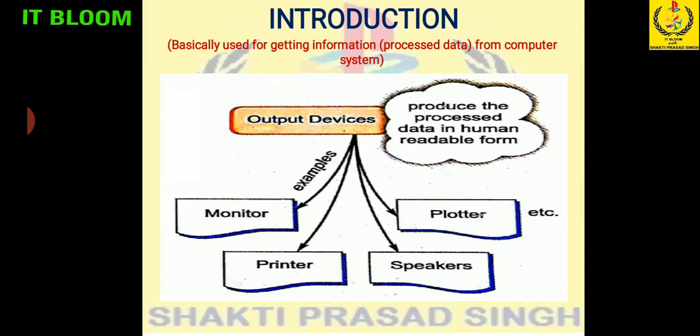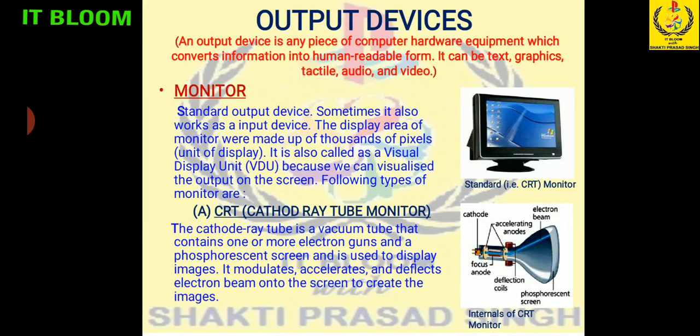Normally we are using monitor, printer, and speaker as output devices. Somewhere we are also using plotters and other output devices like webcam. An output device is any piece of computer hardware equipment which converts information into human readable form. It can be text, graphics, tactile, audio, and video — different forms which can be understood by the human being as an output.